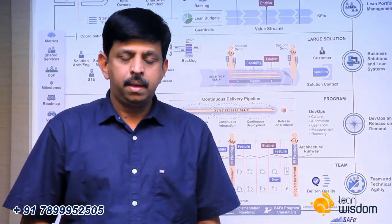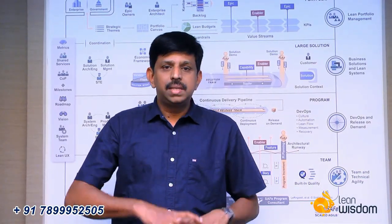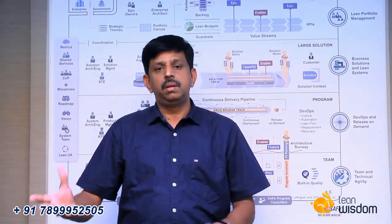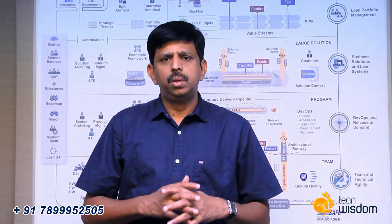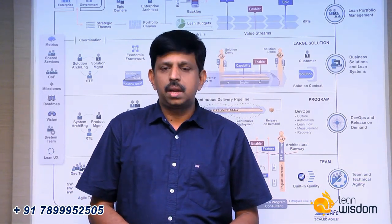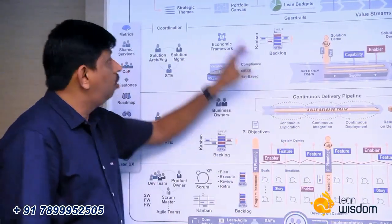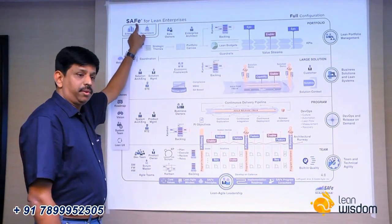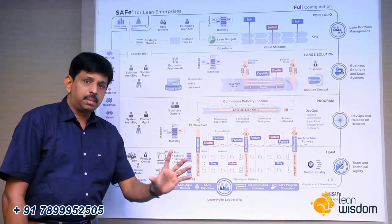But what if you are building an enterprise software or product that combines software, hardware, and firmware? How do you build a product with 100-plus people? Agile alone may not work there, because Scrum is all about one team. That's where you need a scaling Agile framework. SAFe — the Scaled Agile Framework — is one of the most popular frameworks for scaling Agile, and it helps build products with 100-plus people.